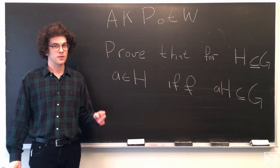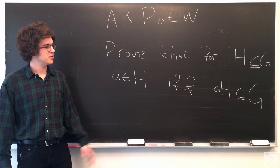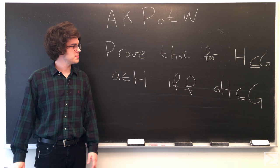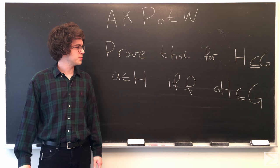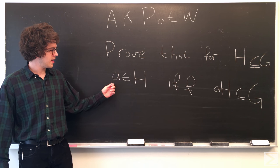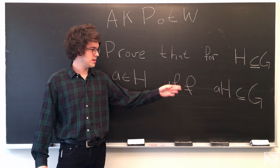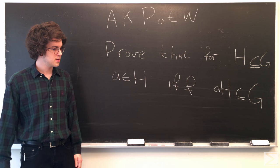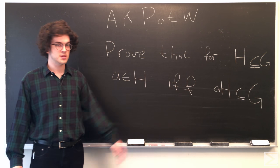This week we have a proof. We're trying to prove an if-and-only-if statement based on groups and subgroups. So if we have H, that's a subgroup of G, then A is an element of H if and only if A-H, which is the left coset of H, is a subgroup of G.